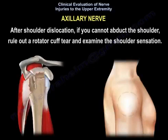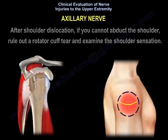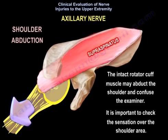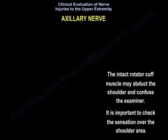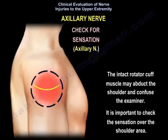After shoulder dislocation, if you can abduct the shoulder, rule out rotator cuff tear and examine the shoulder sensation. There is another scenario when the intact rotator cuff muscle may abduct the shoulder and confuse the examiner. It is important to check the sensation over the shoulder area.